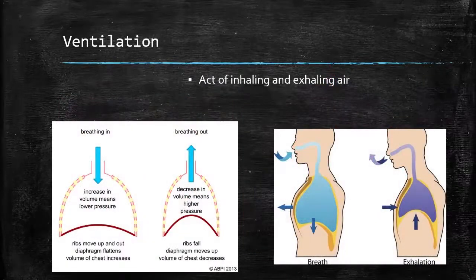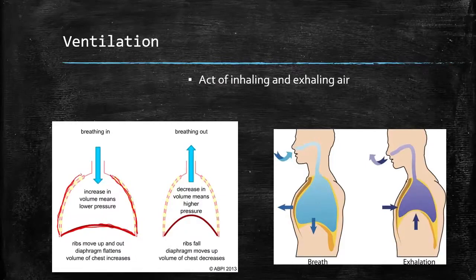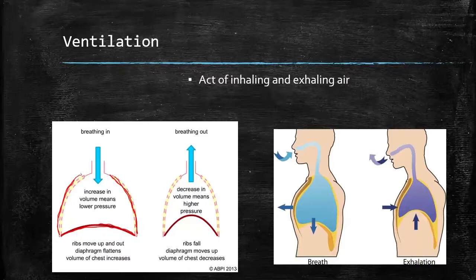Let's talk about how we actually get air in and out of our lungs — that's called ventilation. The picture on the left is essentially a picture of the thoracic cavity itself. We have the diaphragm at the bottom and our intercostal muscles off to the side. What happens is our diaphragm flattens out, intercostal muscles flare up and out, which essentially causes more volume inside of our chest. When we do that, we decrease the pressure in our chest.